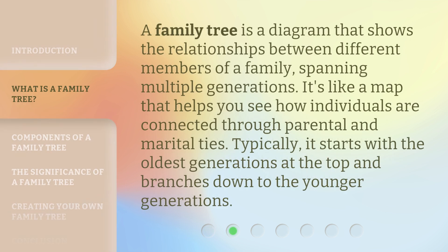A family tree is a diagram that shows the relationships between different members of a family, spanning multiple generations. It's like a map that helps you see how individuals are connected through parental and marital ties. Typically, it starts with the oldest generations at the top and branches down to the younger generations.